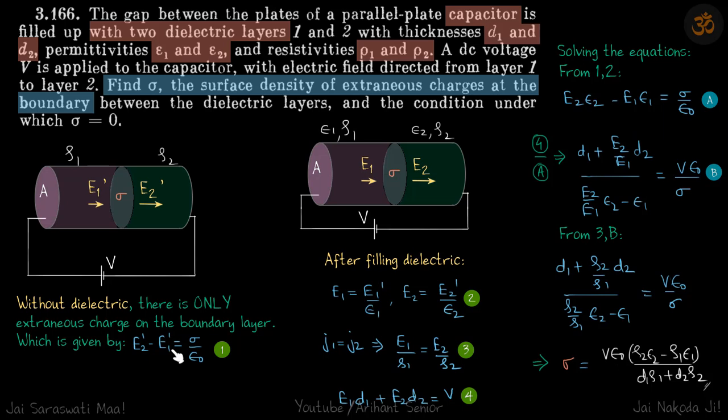We have got rid of E2 dash and E1 dash. But we still have now two more variables that is E1 and E2. We need two more equations, actually three variables sigma E1 and E2. We need actually two more equations because these are two equations.